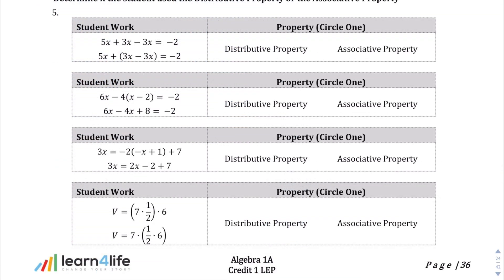Question number 5 on page 36. We're going to circle one of the properties there. Here's student work and it looks like they've grouped this together. It's definitely not the distributive property. It's the associative property because those two associate together. The next part, we have the student work here and it looks like what happened was they distributed that 4. That negative 4 times x gives you negative 4x. That negative 4 times negative 2 gives you a positive 8. That's clearly the distributive property.